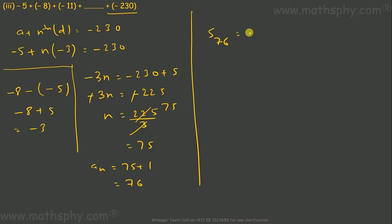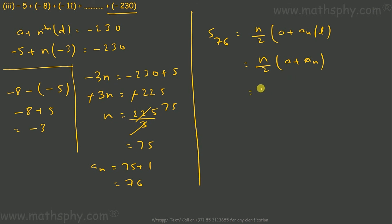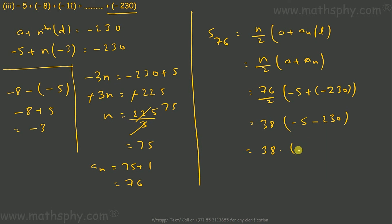The sum up to 76 terms is S = n/2 × (a + last term). Note: you can write a_n or just 'l' — both are correct, you don't need to write both. So S = 76/2 × (-5 + (-230)) = 38 × (-235) = -8930. The sum of the 76 terms in this progression is -8930.